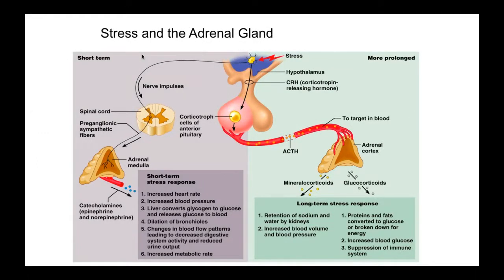This is called adrenal fatigue. When people are under stress, the body's preference is to produce cortisol instead of making sex hormones. This is why when people are under stress, infertility rates go up. Many couples try to get pregnant while under stress, and it gets harder — because they're pushing out cortisol and can't produce their sex hormones.